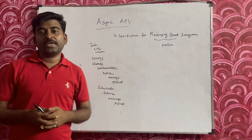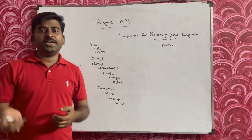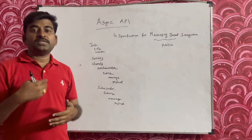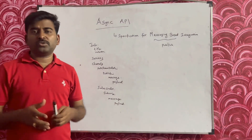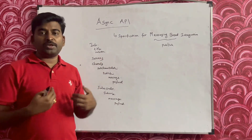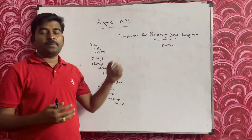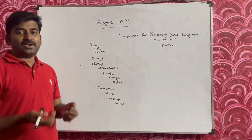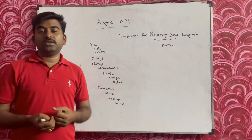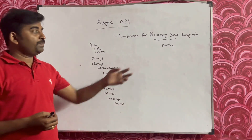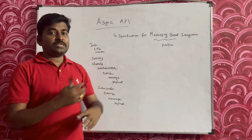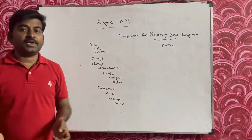That is what is called AsyncAPI. Instead of sharing it via email, you keep it in a specification so that you can share it with a number of developers and there won't be any confusion. They can easily refer to or import the AsyncAPI spec into their system so they can understand how to implement the publish-subscribe messaging pattern, because it has all the details.